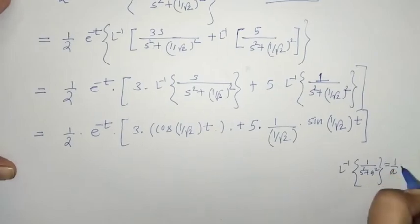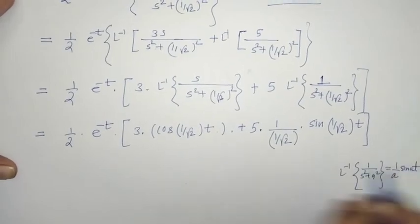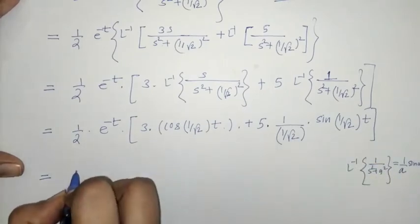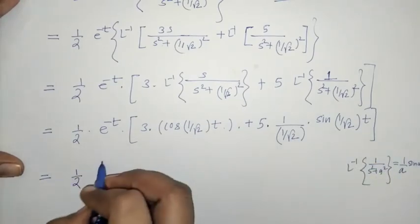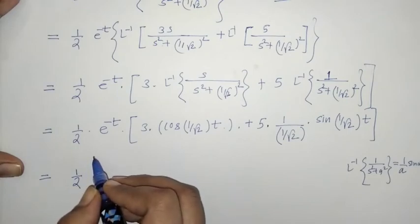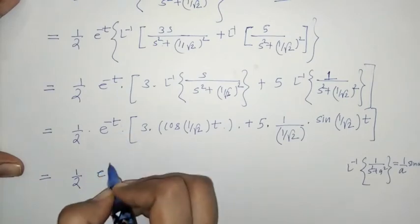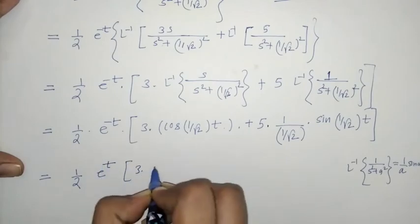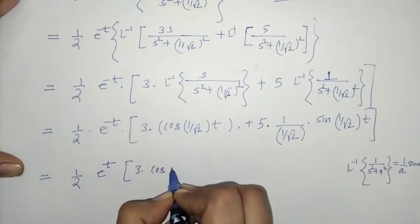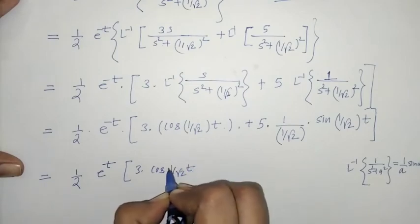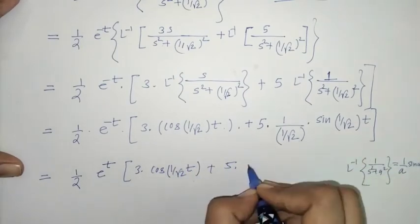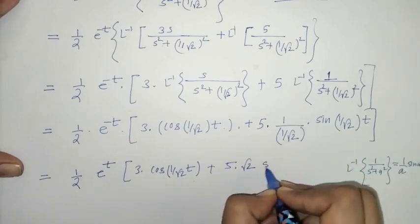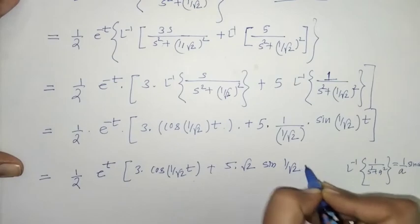Applying the formula: L-inverse of 1/(s² + a²) = (1/a)sin(at). On simplification, the full answer is (1/2) × e^t × [3 cos(t/√2) + 5√2 sin(t/√2)]. This is the required inverse Laplace transform for the second function.